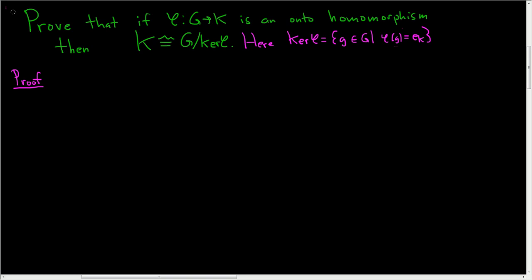Prove that if φ from G to K is an onto homomorphism, then K is isomorphic to G mod the kernel of φ. What is the kernel of φ? It's the set of all elements in G such that φ takes little g and sends it to the identity element in K. So it's all the G's that φ maps to the identity element. To prove this we have to come up with a homomorphism that is one to one and onto, because we've come up with an isomorphism.